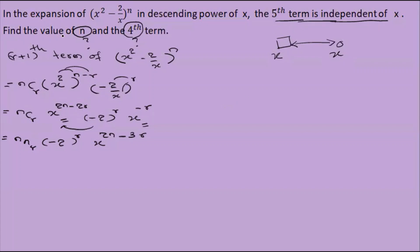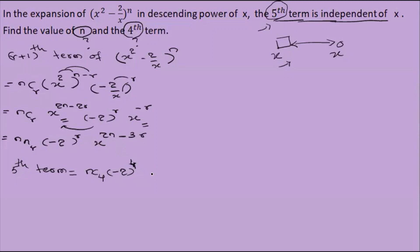The fifth term corresponds to r equals 4. So T5 equals nC4 times (minus 2) to the power 4. The power of x becomes 2n minus 3 times 4, which we set equal to zero.